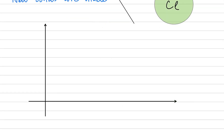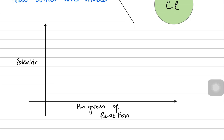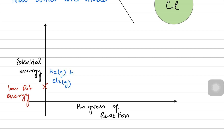That is exactly the reason that molecules need to absorb energy, known as activation energy. Imagine a graph with the progress of reaction on the x-axis and the potential energy of the particles on the y-axis. Hydrogen gas and chlorine gas were my reactants; when these particles had their own potential energy, they had a lower potential energy.